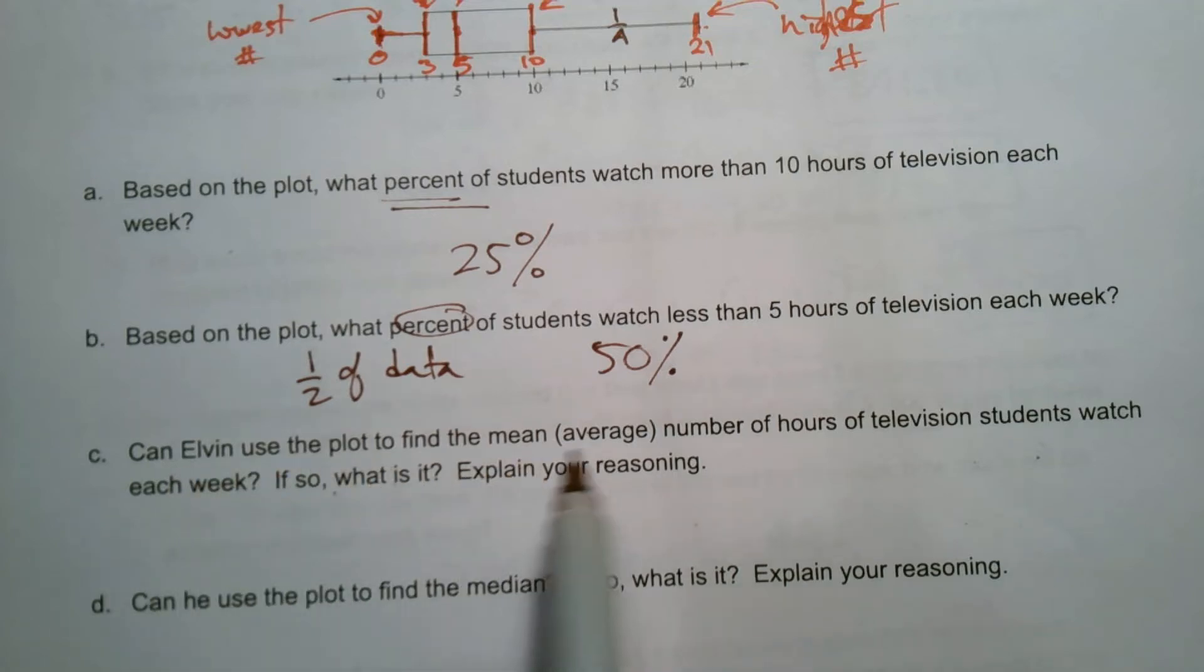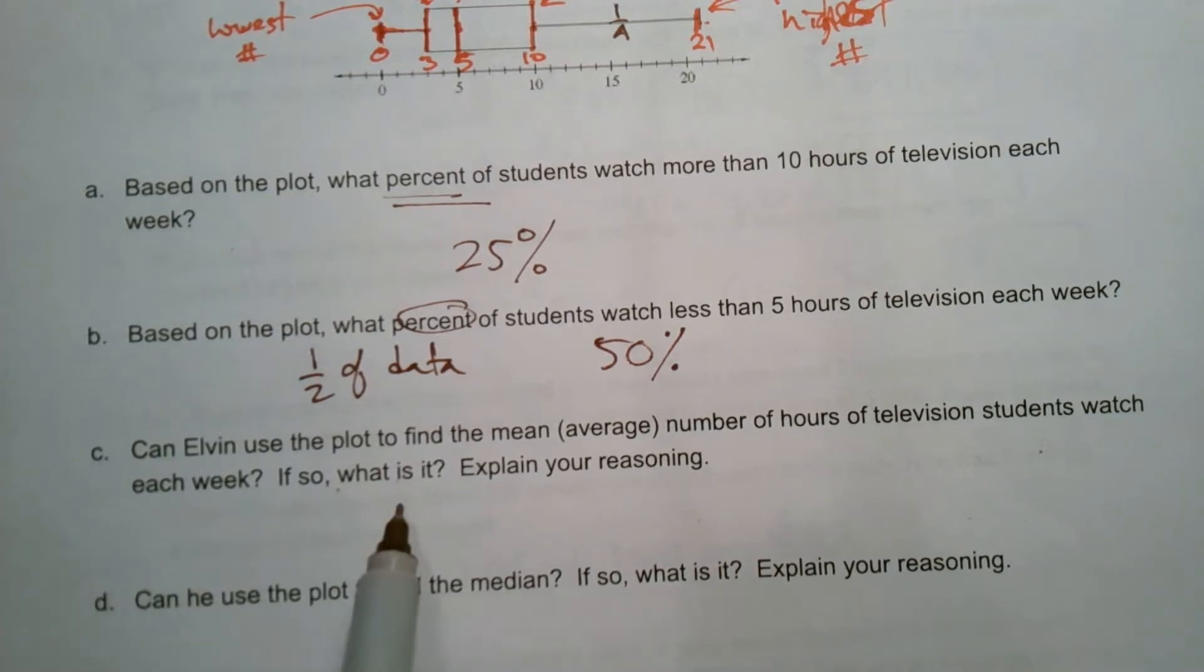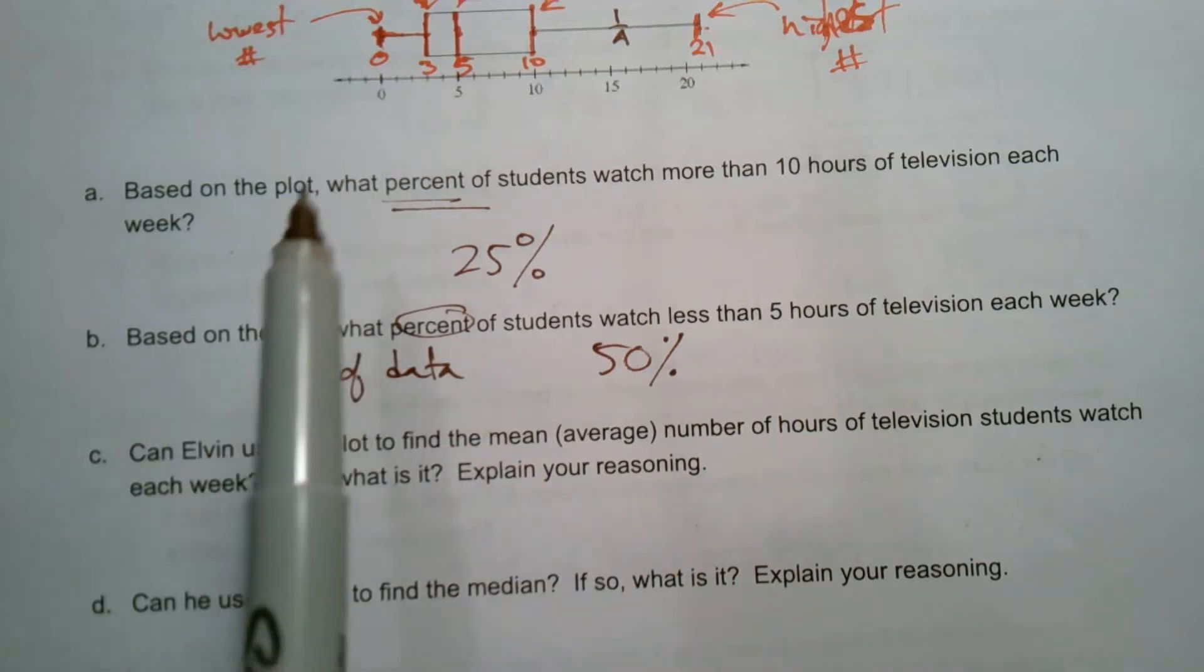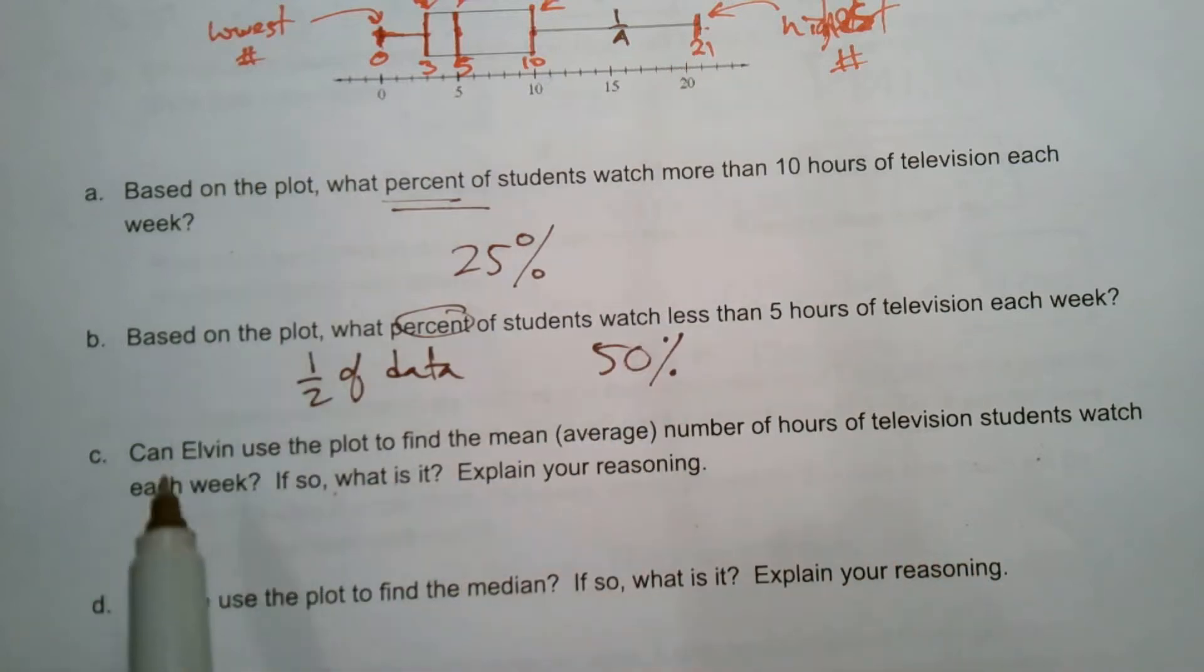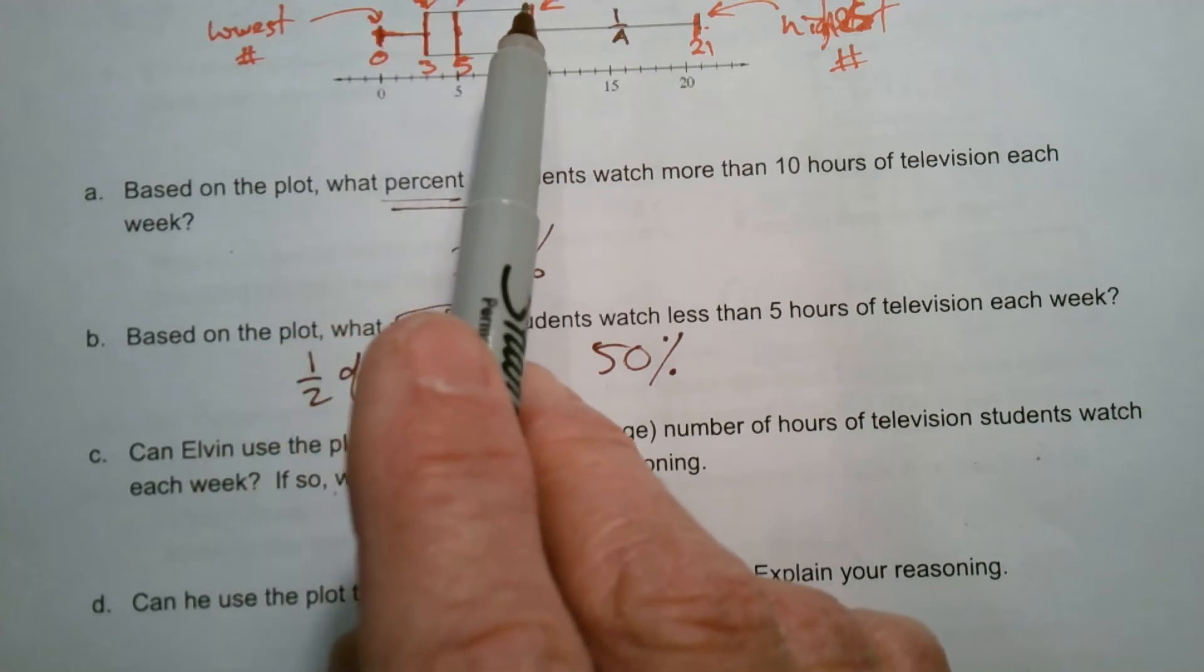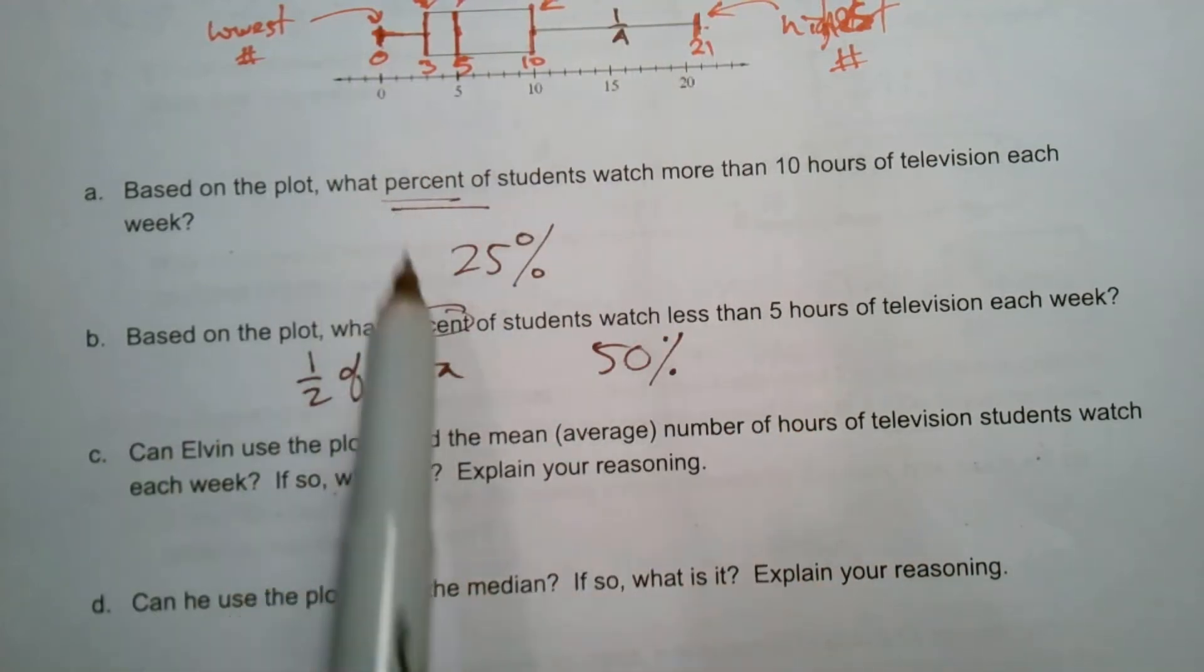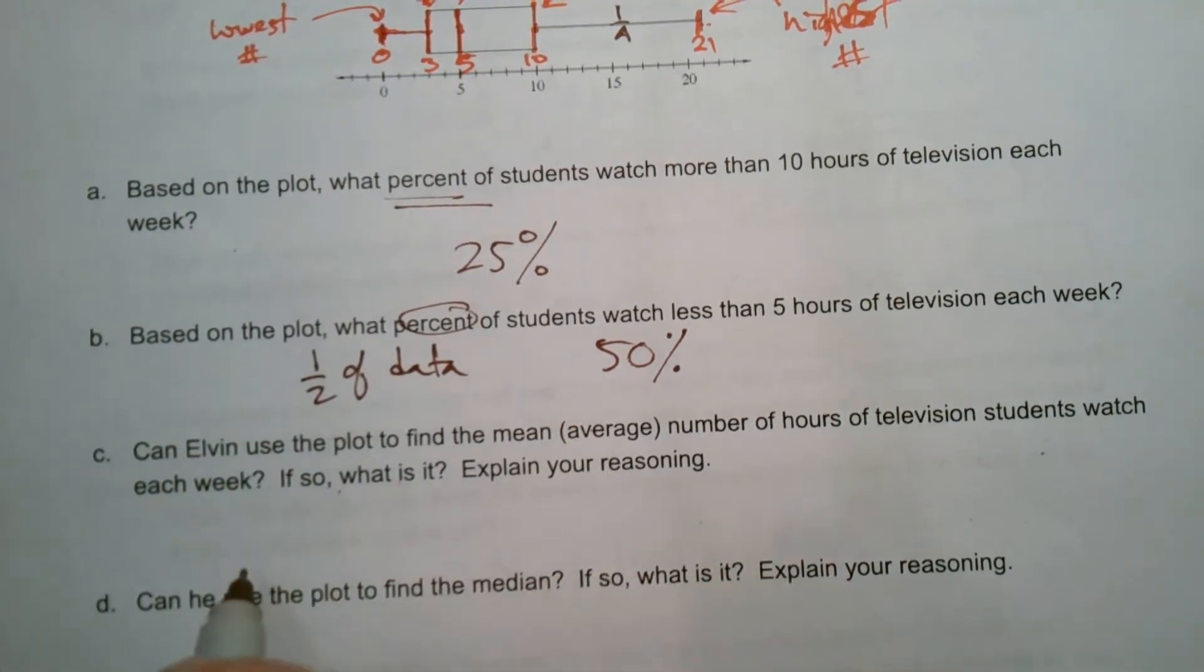And then can Elvin use the plot to find the mean, the average number of hours of television students watch each week? If so, what is it? Explain your reasoning. So in order to find the mean, the mean, remember is taking all of the data points, add them all up and divide by the number of data. Like if there was, it doesn't tell me how many students were surveyed, right? Numbers of hours spent watching TV. So I don't know how many students were surveyed. So I don't know how much data there is and I don't know all the specific points.